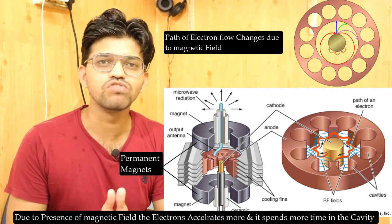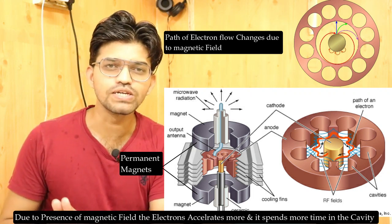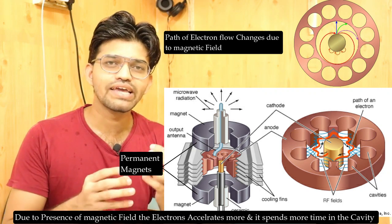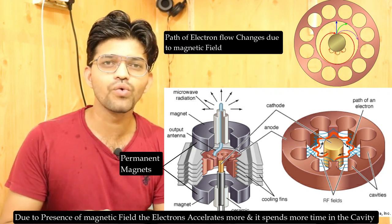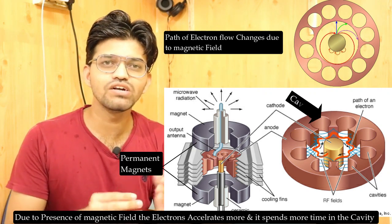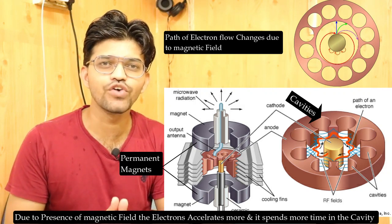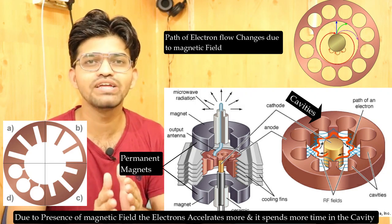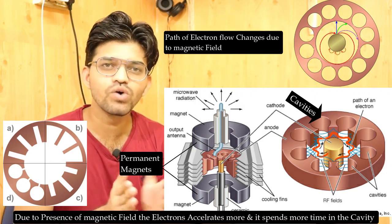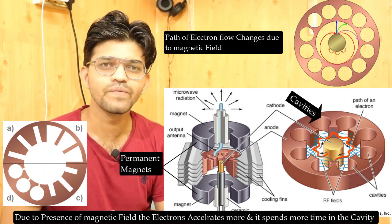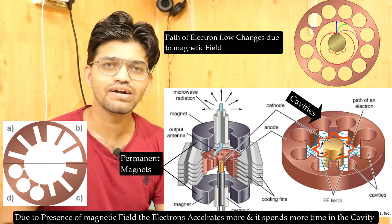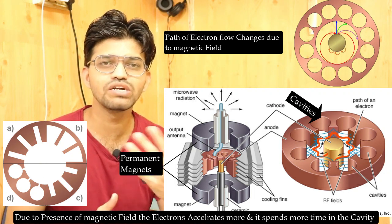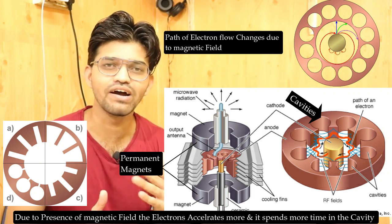In order to increase the efficiency of this process, a cavity magnetron is used. The anode has different cavities — these can be in a circular form, a slotted form, or a slotted tapered form. These different types of cavities in the anode produce different amounts of radio waves.